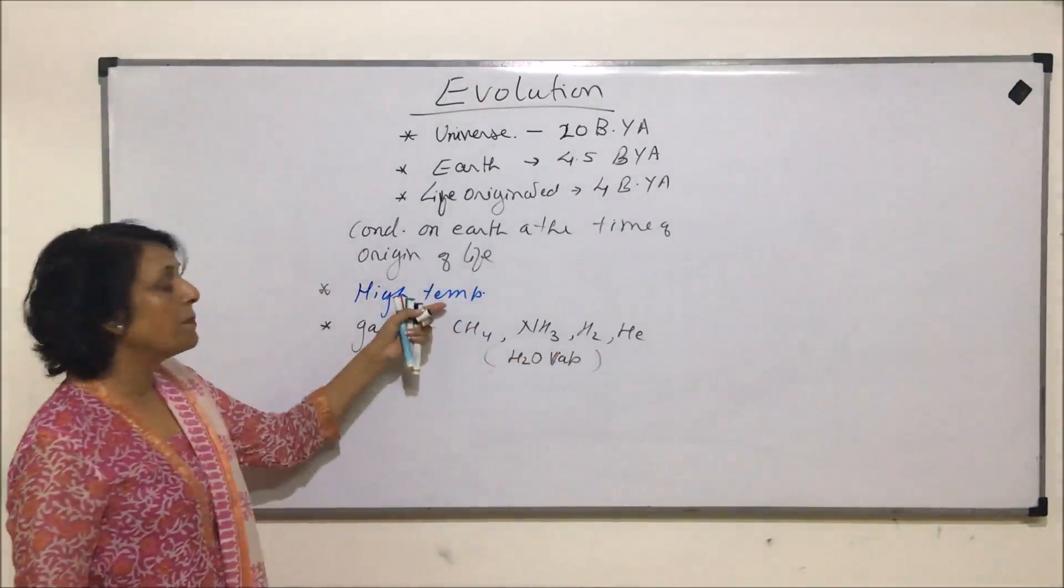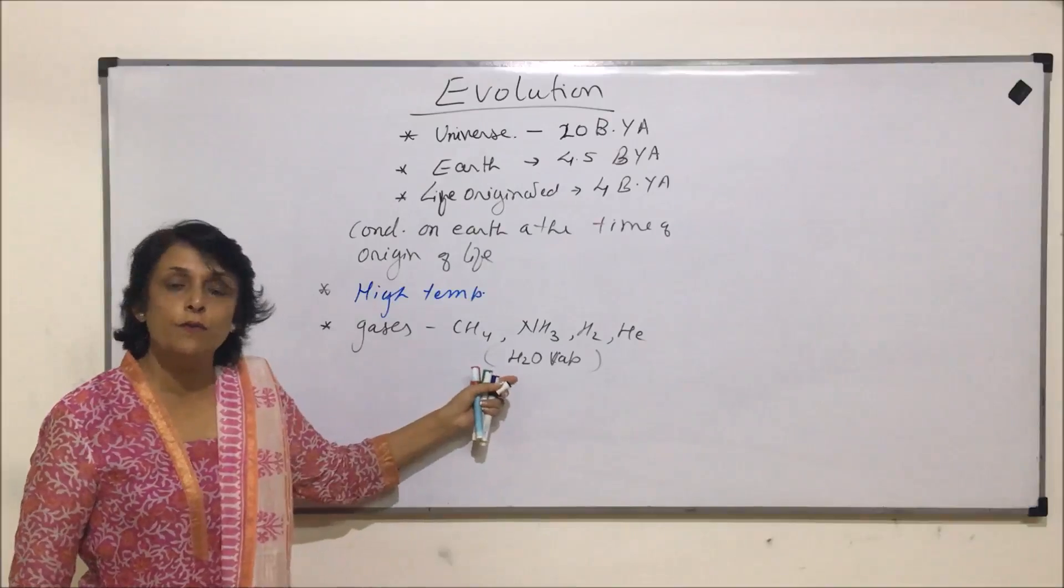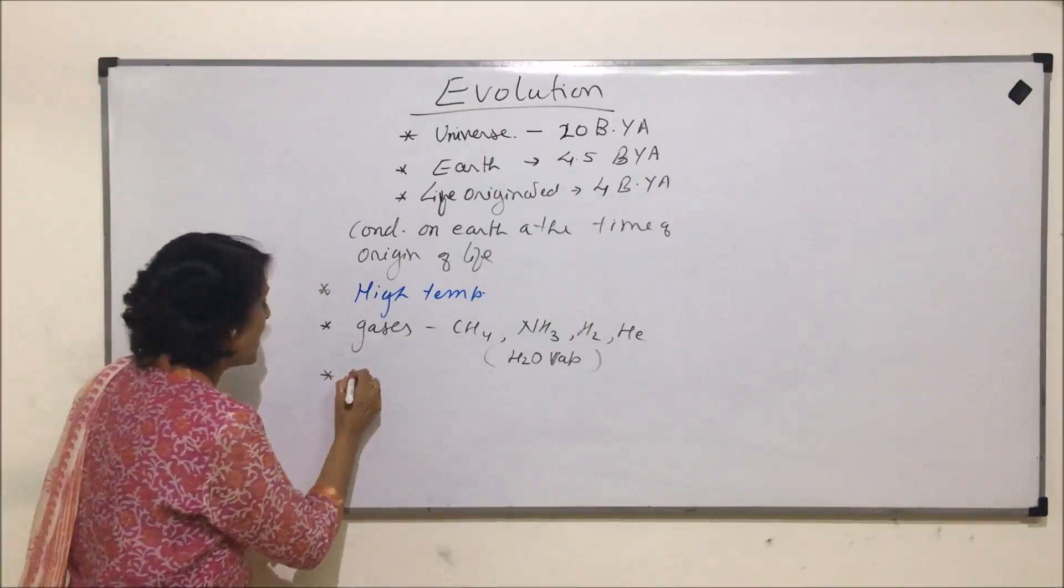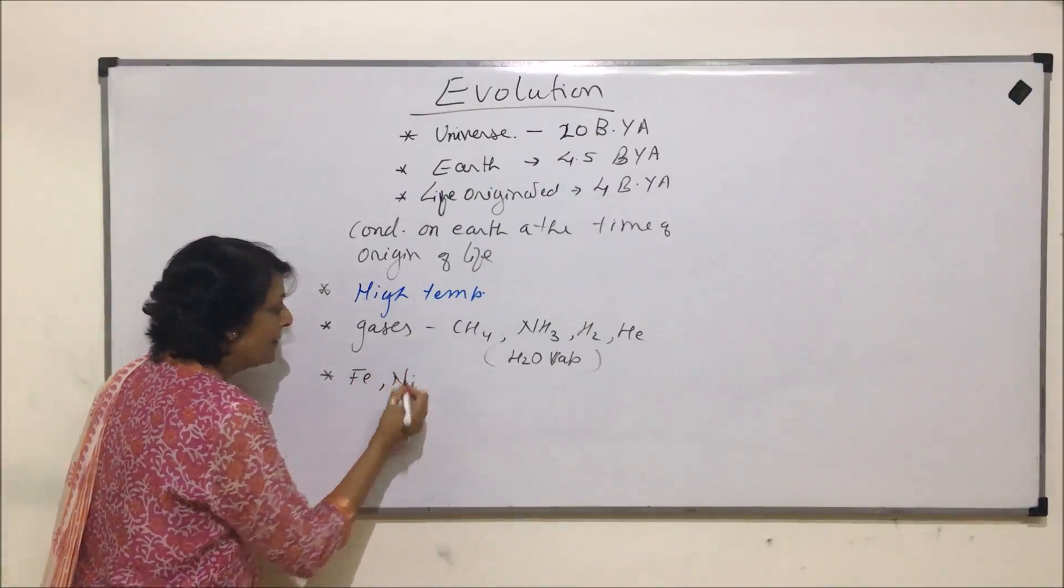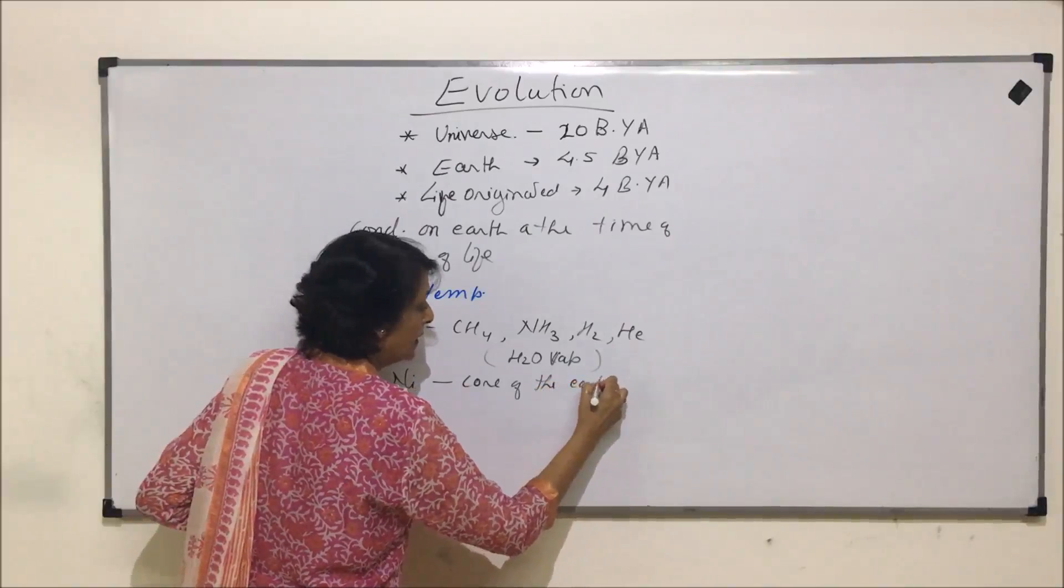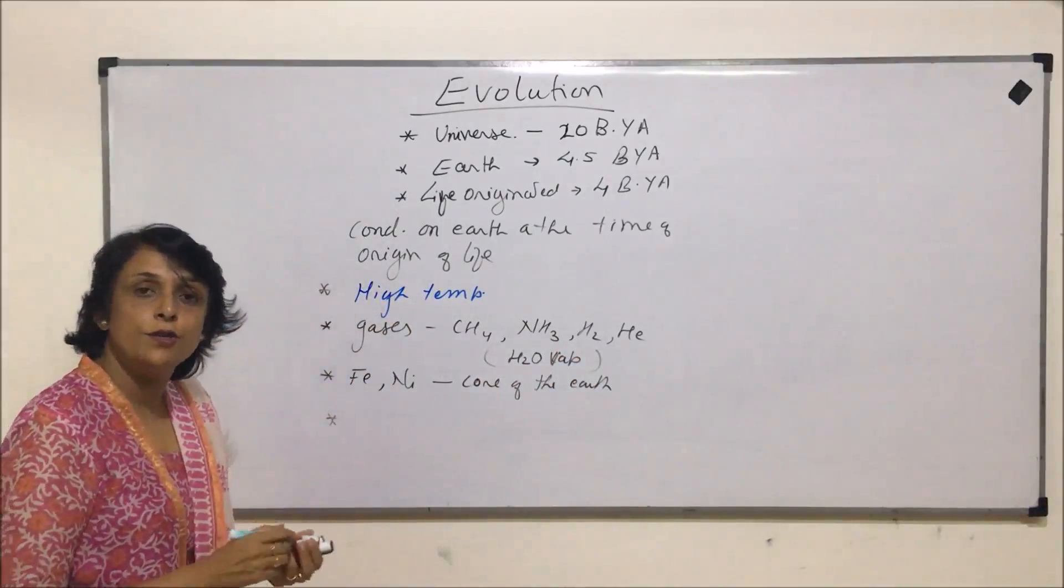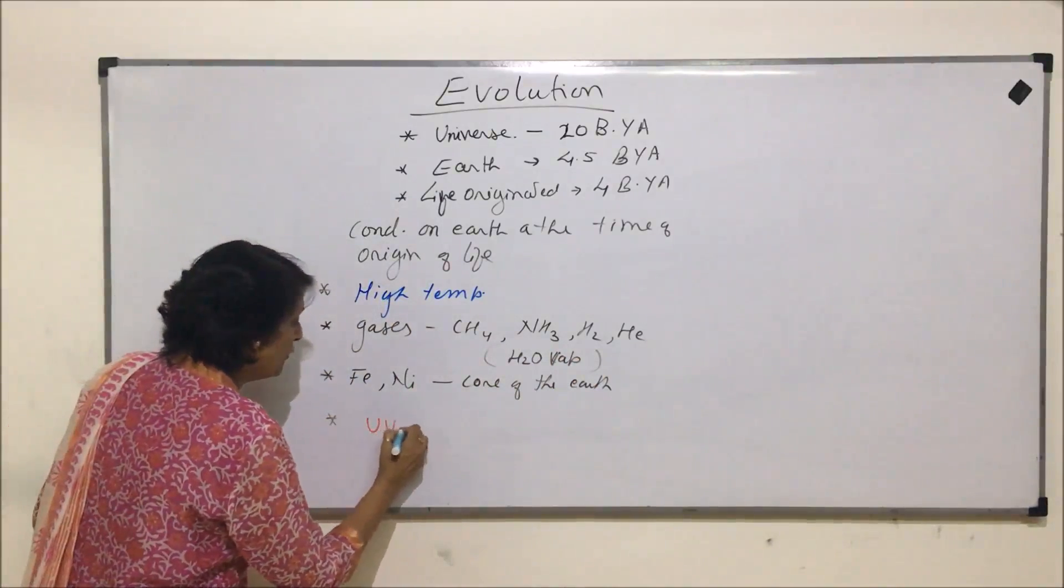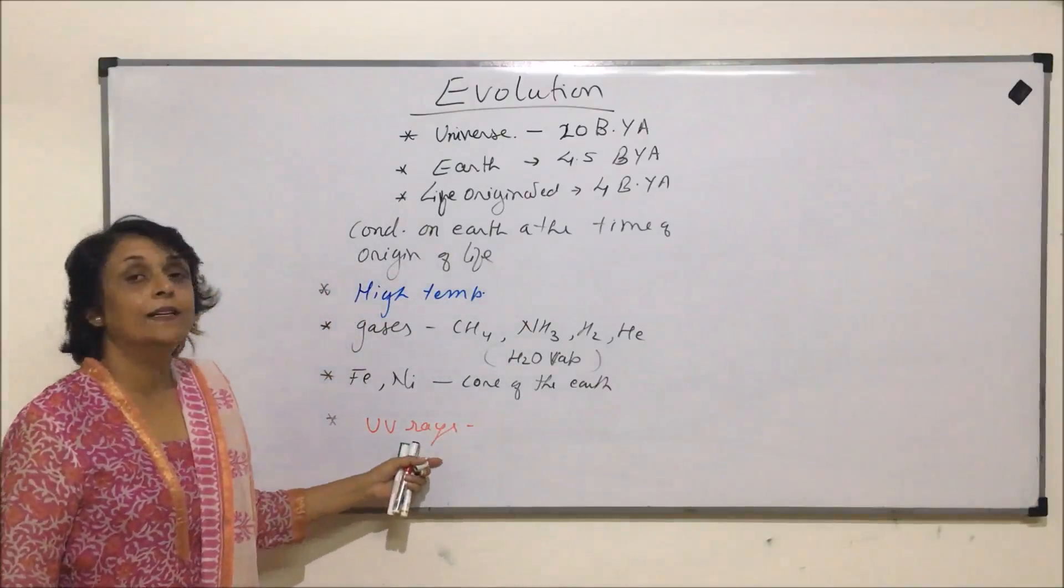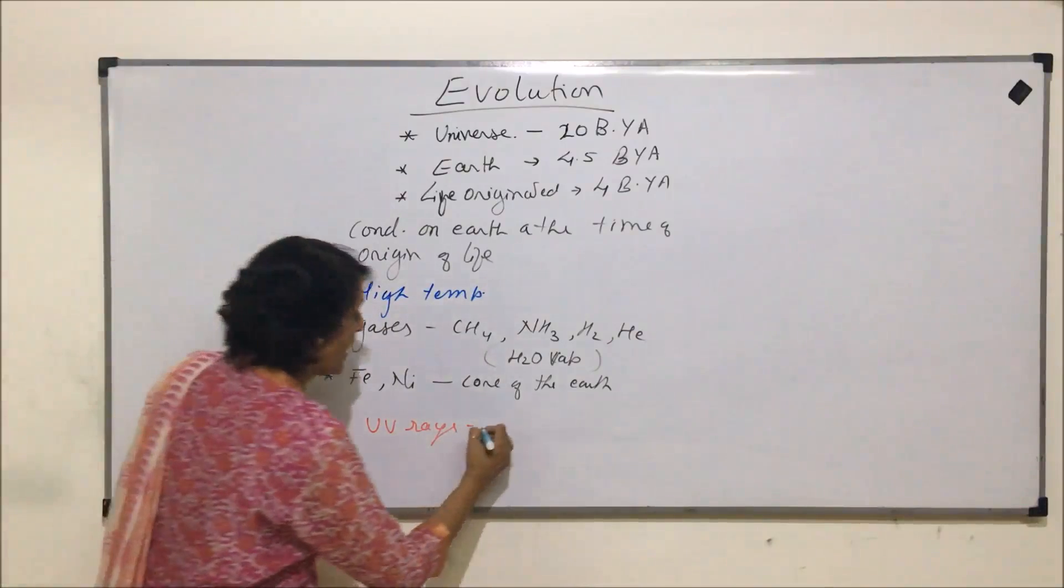Water vapor, because temperature was very high, so all that water which was present was in the gaseous form. The heavy elements like iron and nickel, they made the core of the earth.